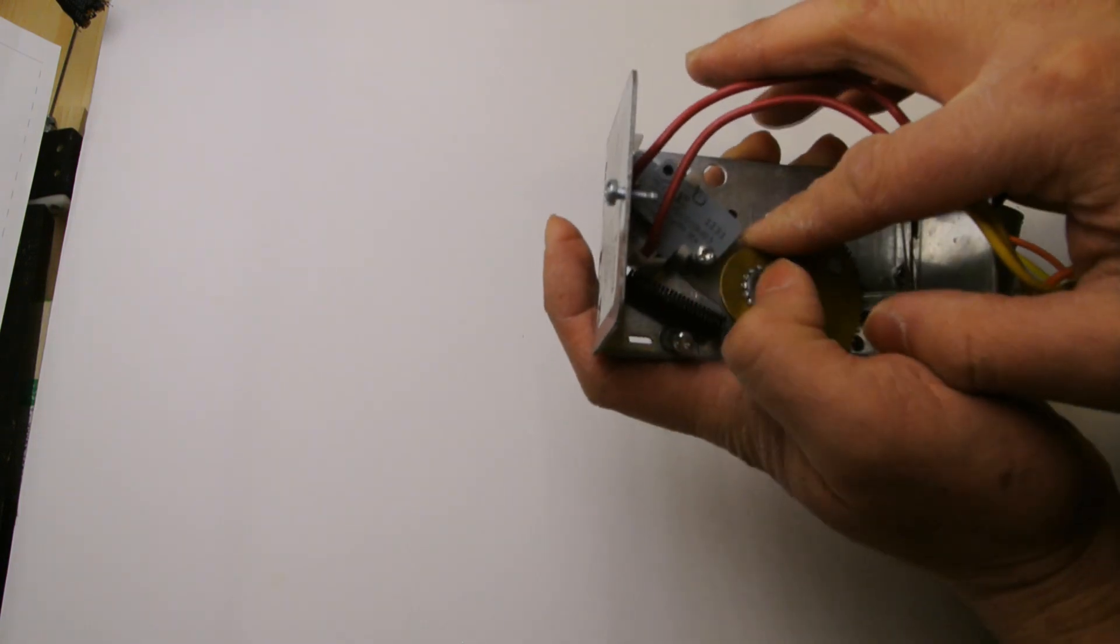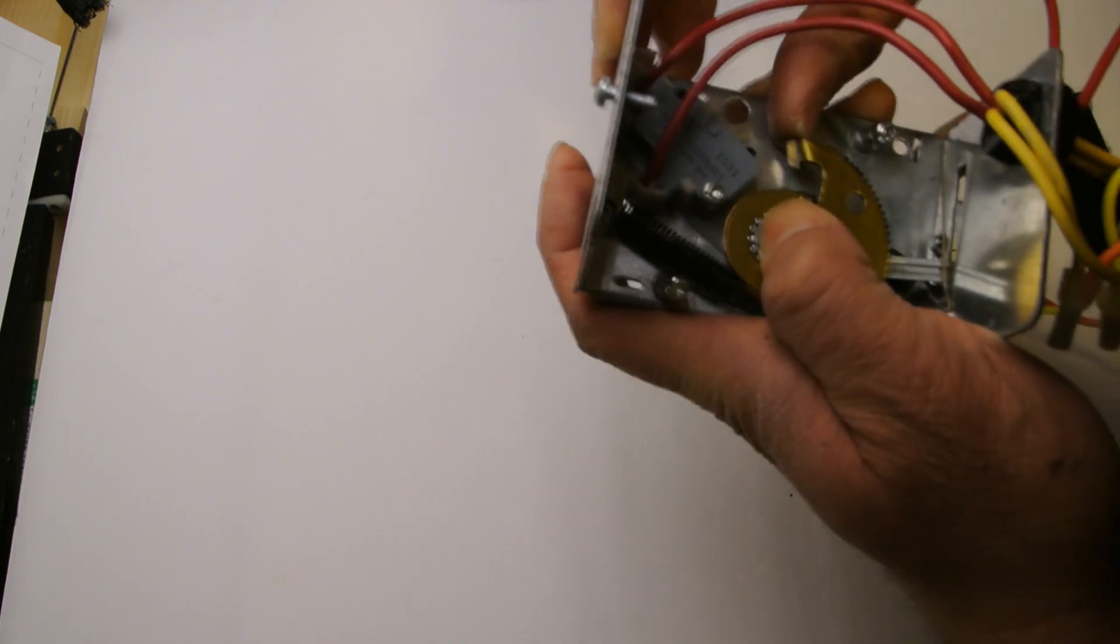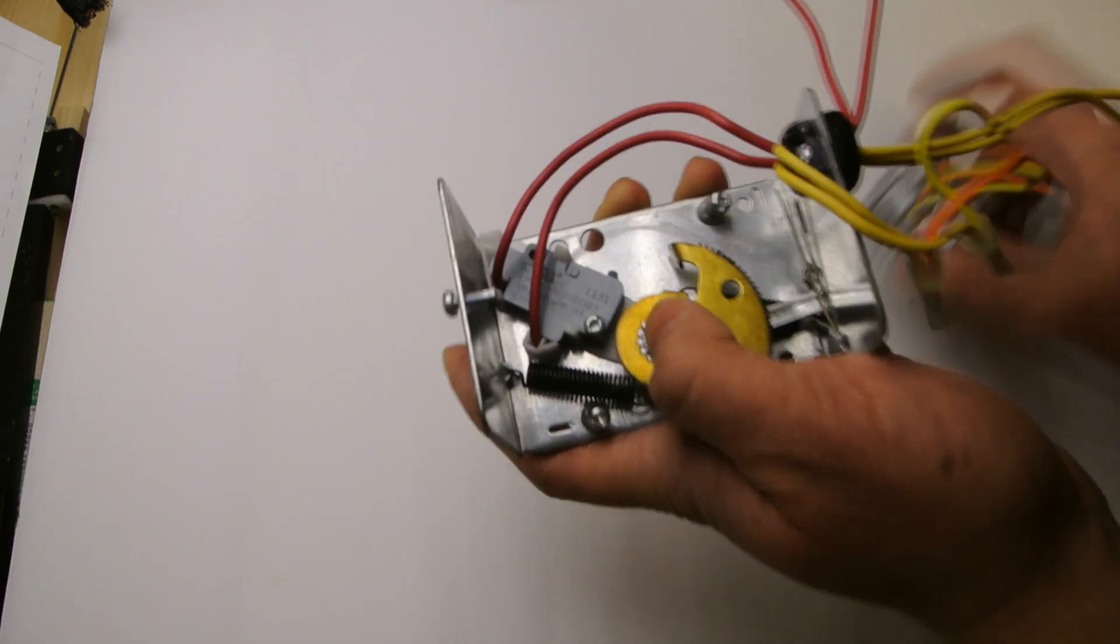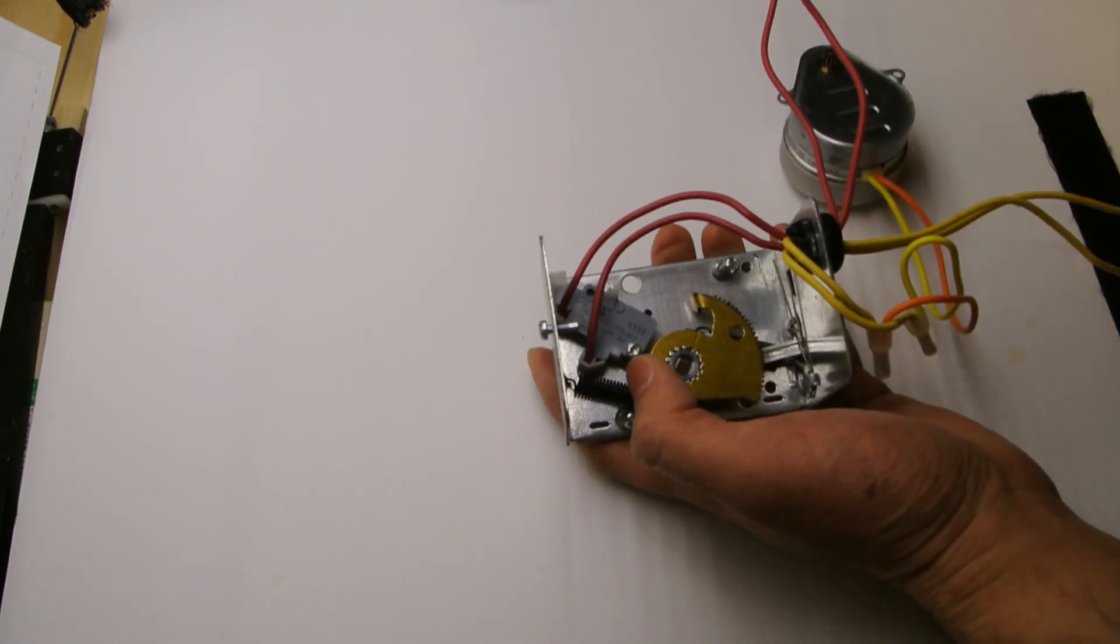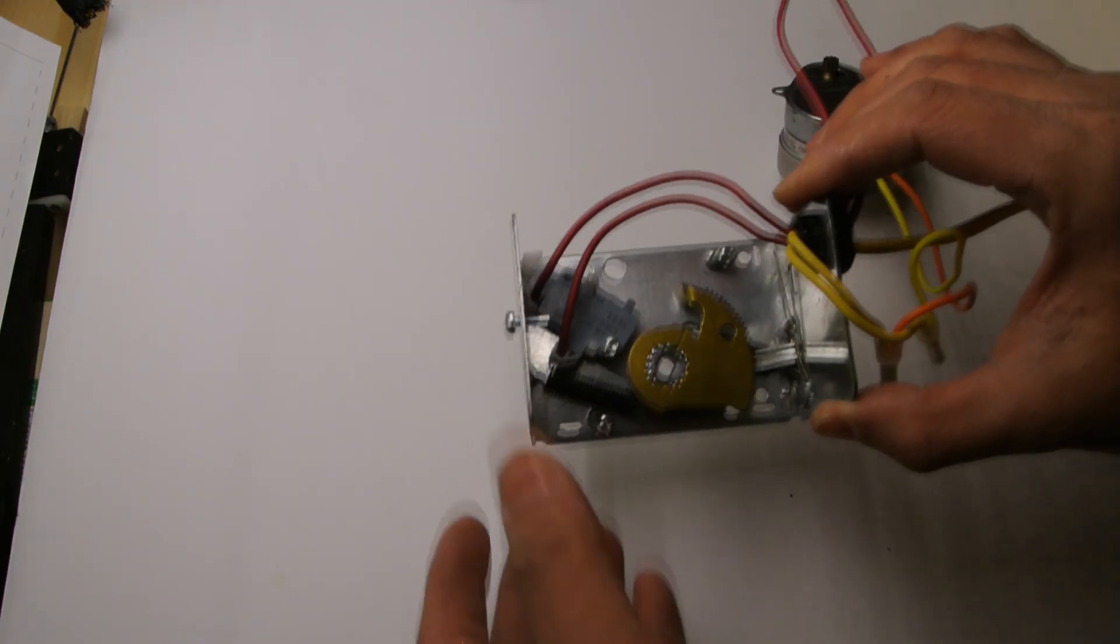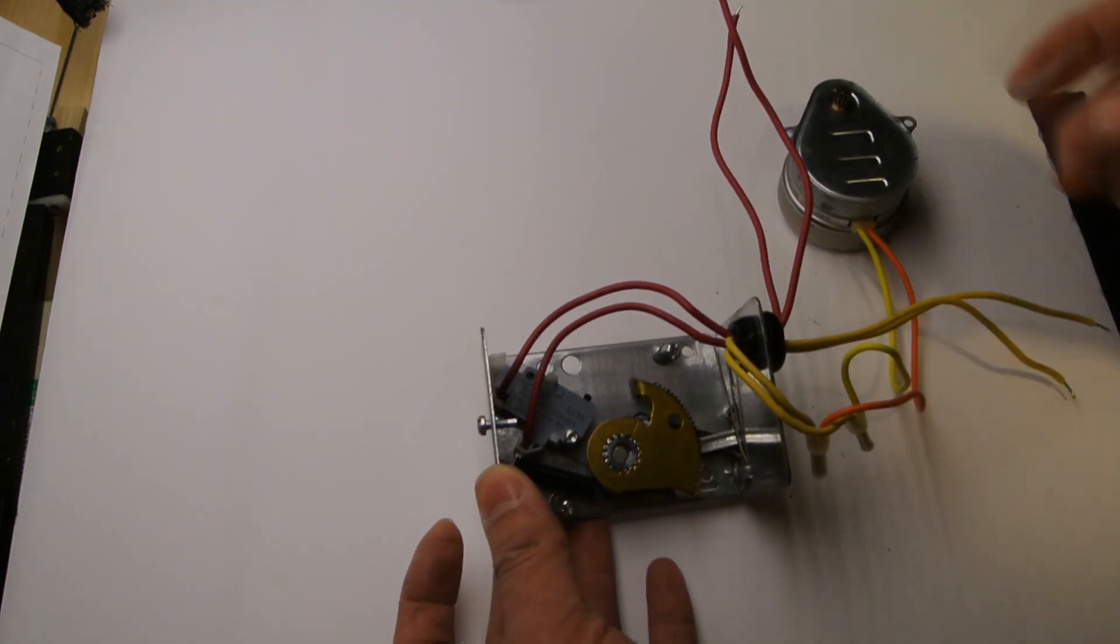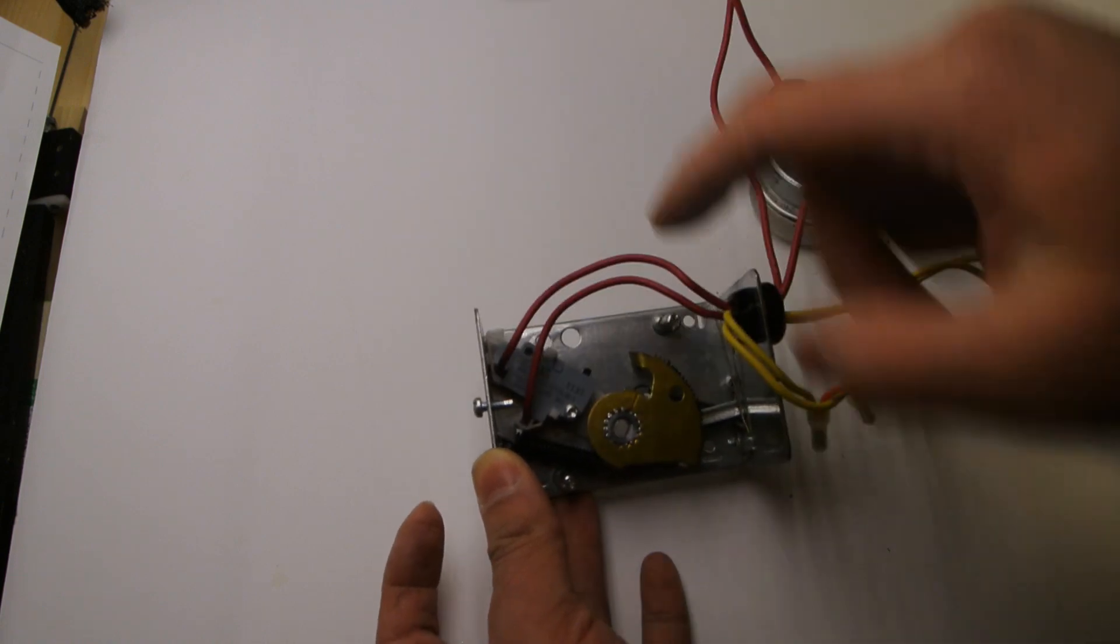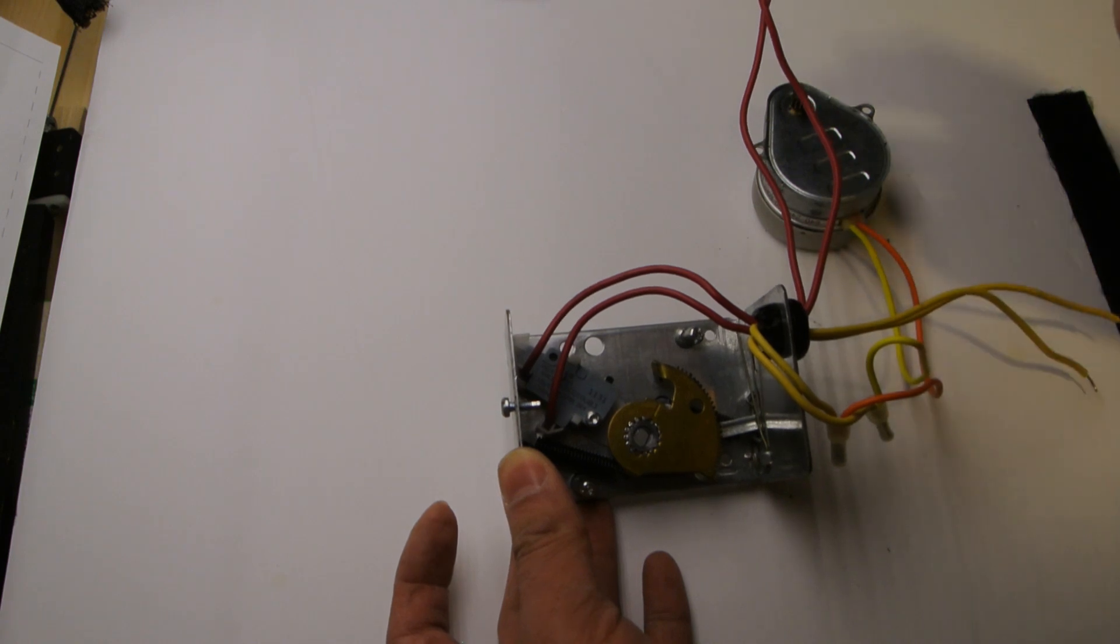So just keep that in mind in terms of troubleshooting as well. It could be the end switch, it could be something mechanical, or it could be something electrical. That's essentially how a zone valve works. Hopefully I didn't confuse anyone and hopefully I was clear in the explanation. So three parts to it: electrical, mechanical with the valve, and then the end switch, which is electrical again.